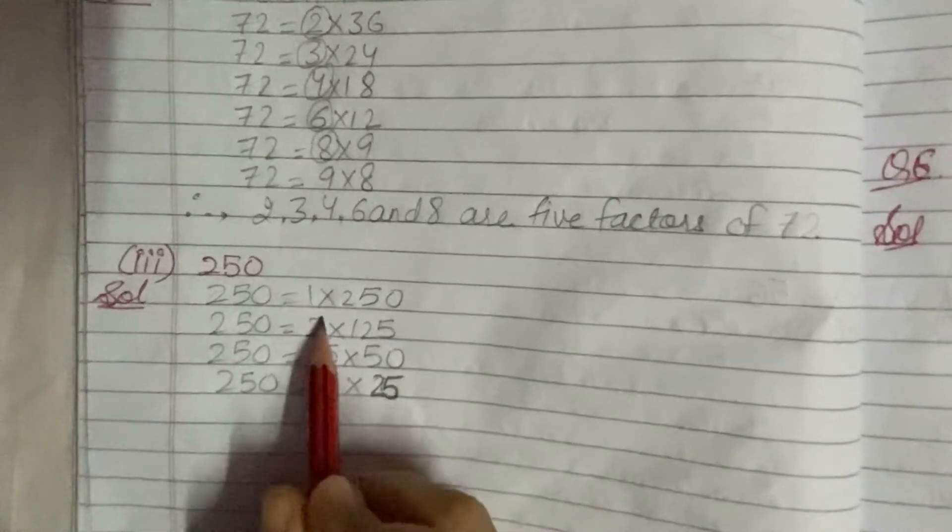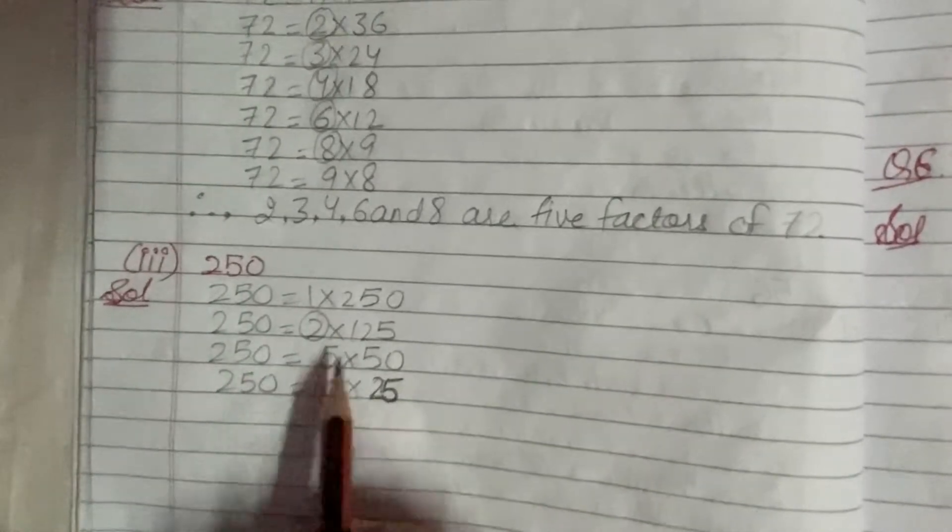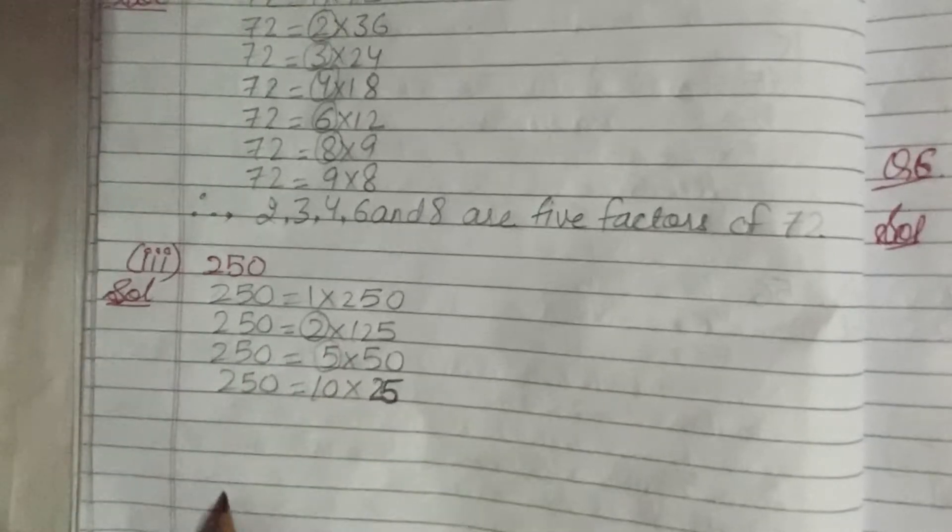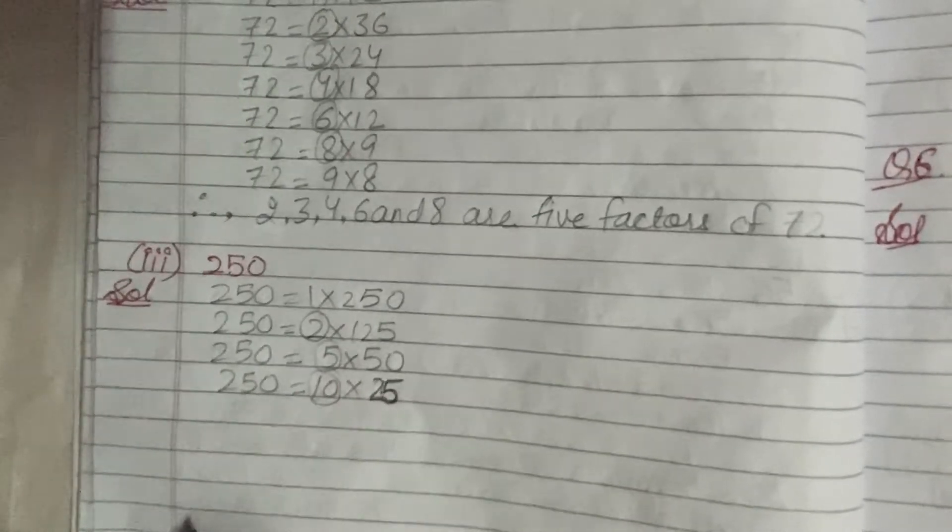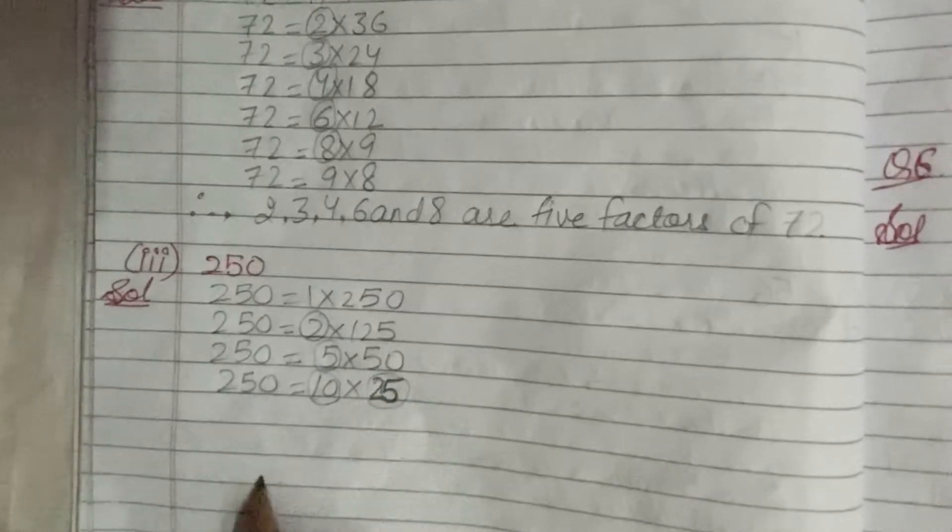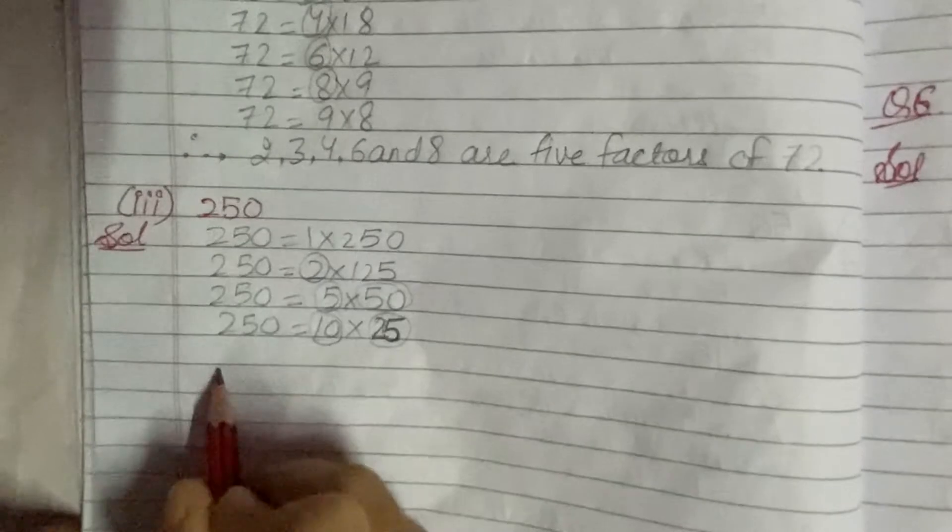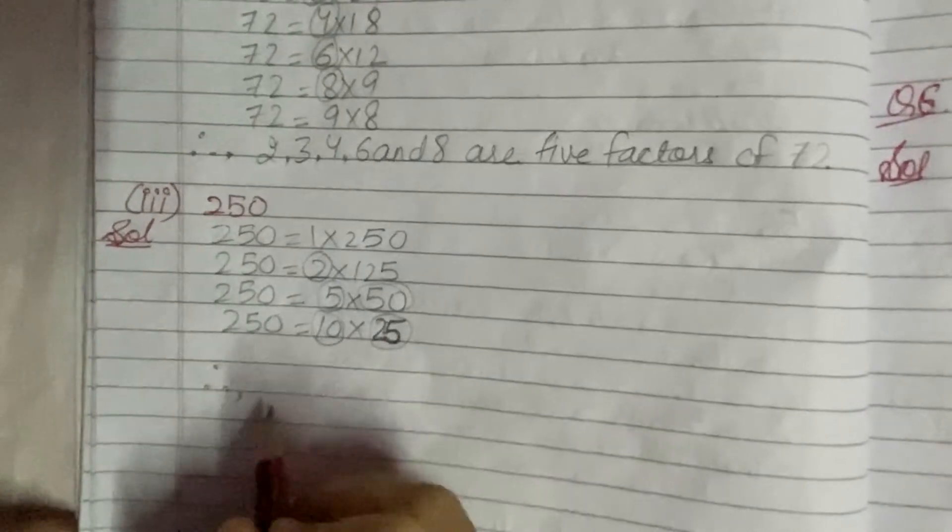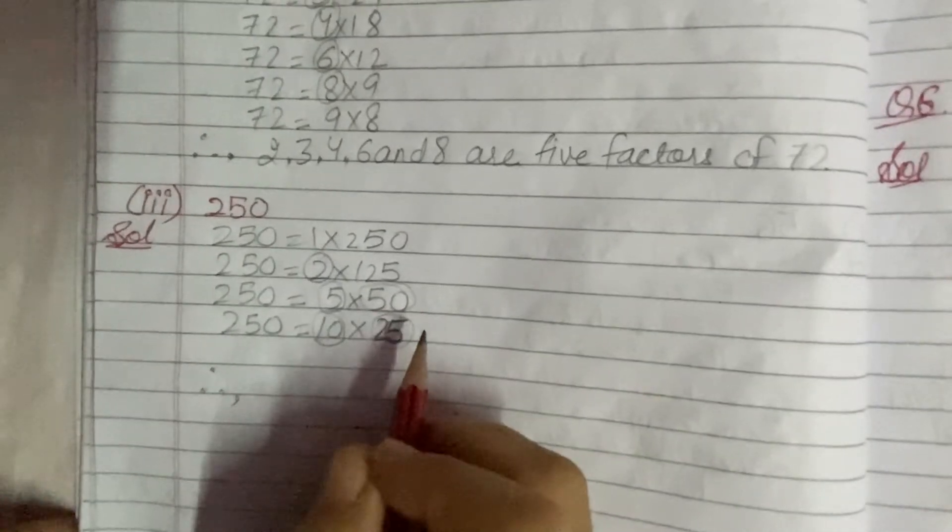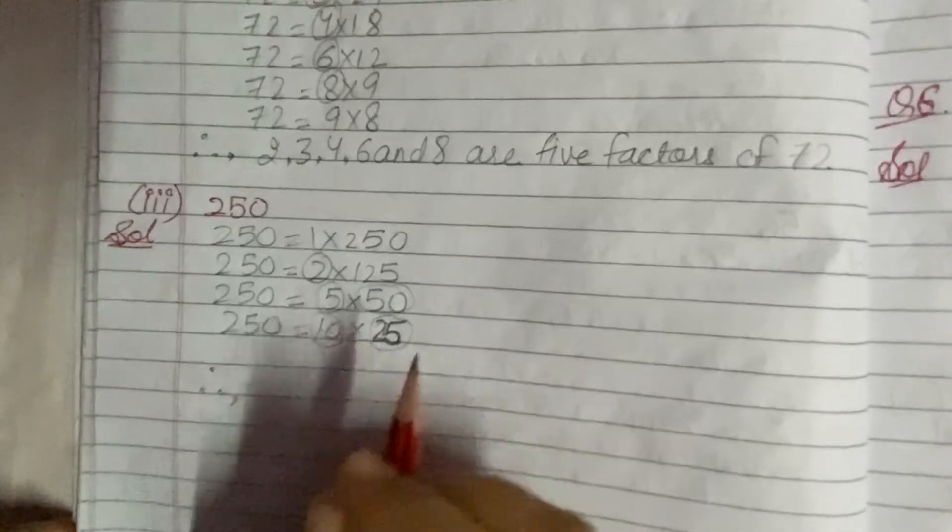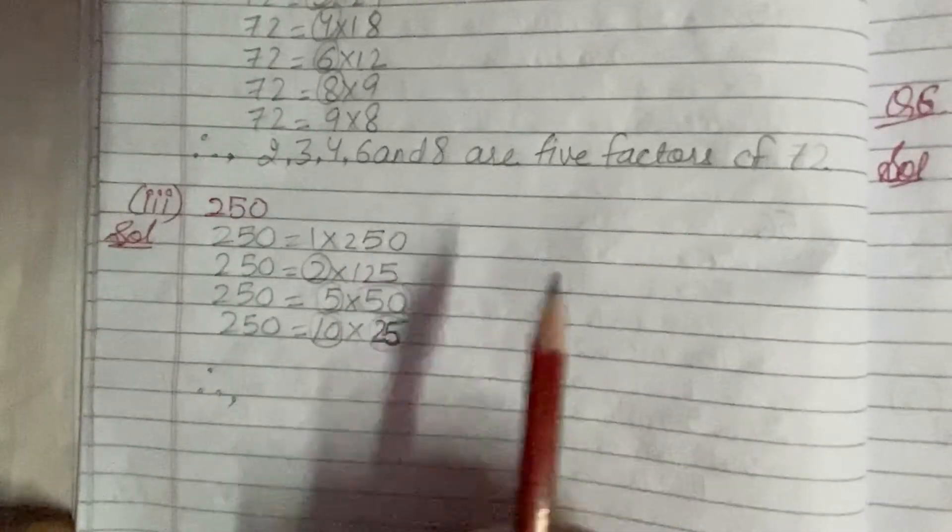So 5 factors you can take: 2 as first factor, 5 as second factor, 10 as third factor, 25 as fourth factor, 50 as fifth factor. Therefore you can take 125 also, but here you have to write only 5 factors.